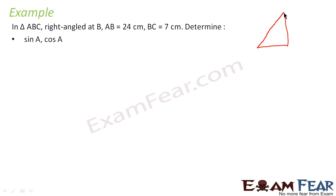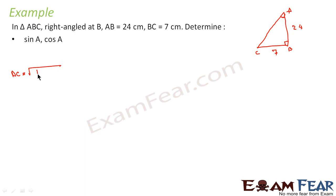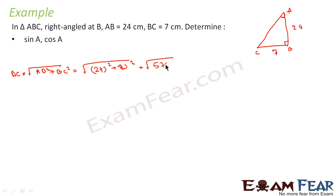This is the right triangle with right angle at B. This is angle B, and these are angles A and C. AB is equal to 24 and BC is equal to 7. We have to find sin A and cos A. Since this is a right triangle, we can apply Pythagoras to find AC. So AC equals root of AB squared plus BC squared, which is root of 24 squared plus 7 squared — that is root of 576 plus 49, which is root of 625, and that is 25.